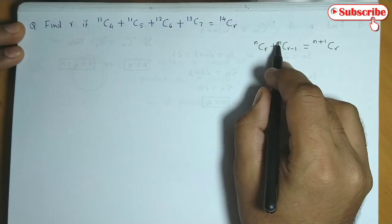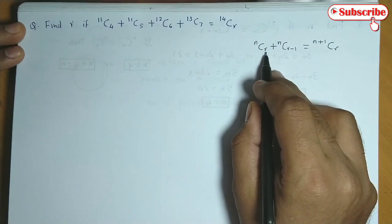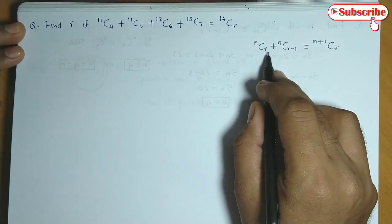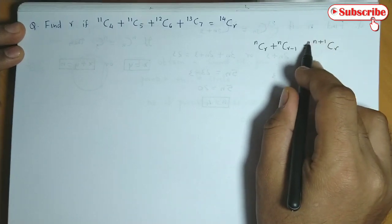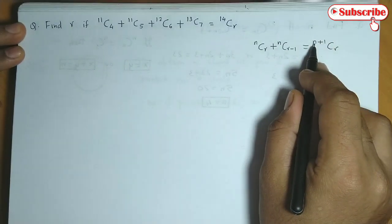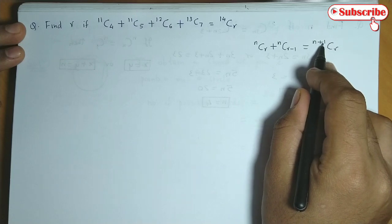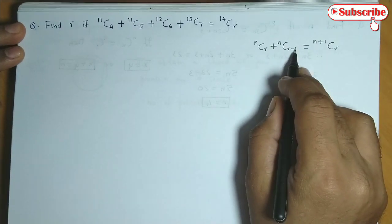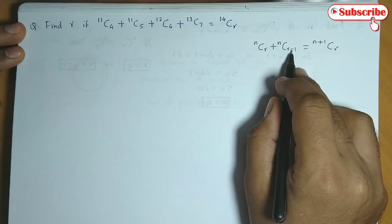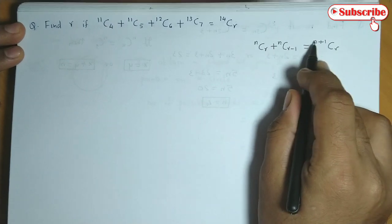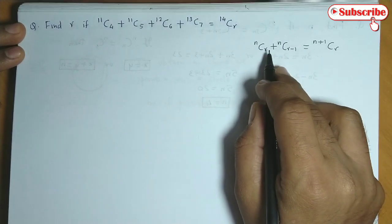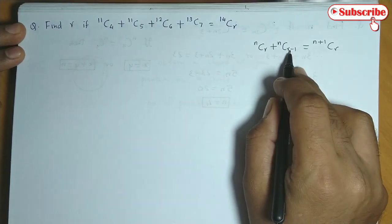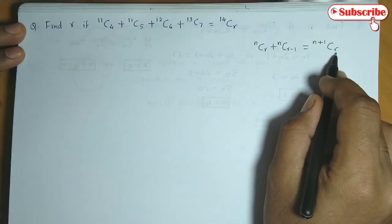So basically the N term must be the same and R must have a difference of 1. Then such two combinations combine into a single combination where N becomes N plus 1, and whichever R is greater, we write that R. We have R and R minus 1, so N changes to (N+1)CR. R is greater than R minus 1, so we write R over here.